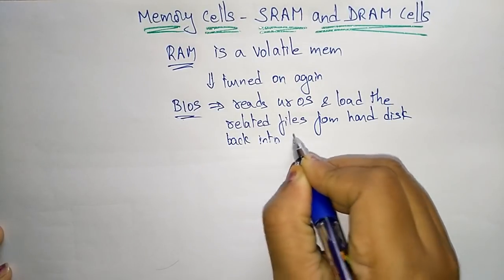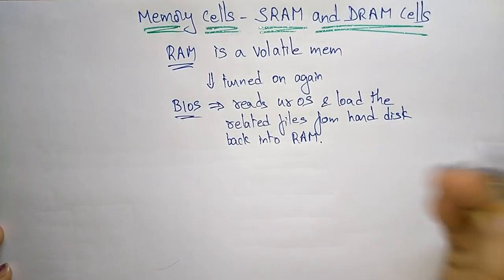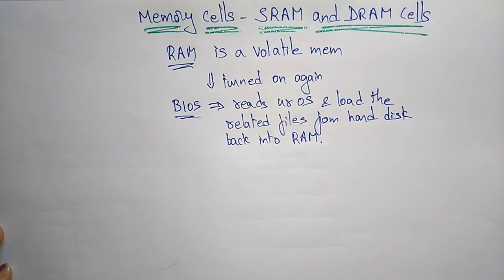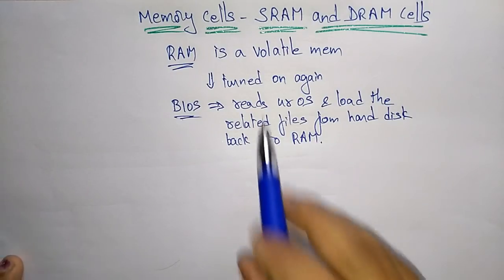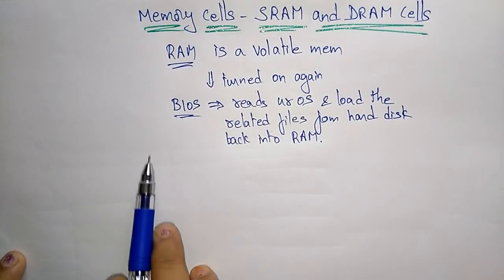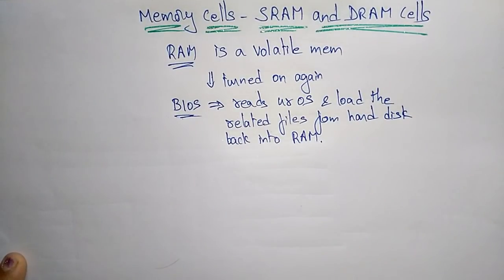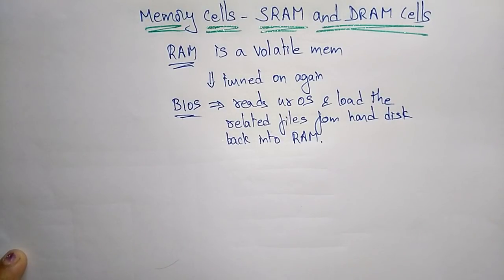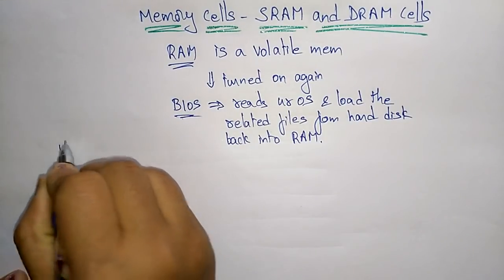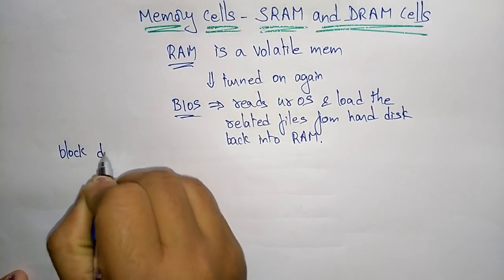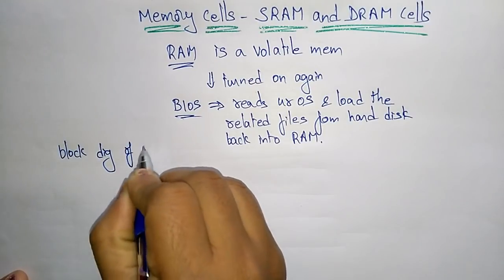So RAM is a volatile memory. Whenever you switch off the computer, all data in RAM is lost. When you turn on again, the BIOS reads your operating system and loads the related files from the hard disk back into RAM. Now let us see the block diagram of RAM.